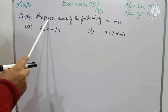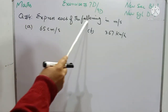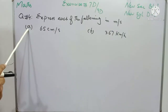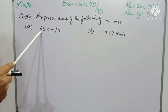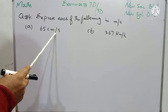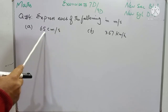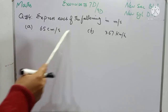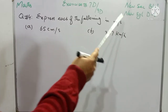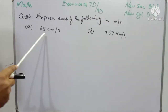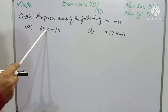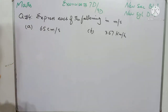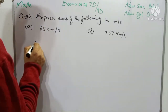Question number 4 is: express each of the following in meter per second. In part A, we have 65 centimeter per second, and we have to convert 65 centimeter per second into meter per second. In this question, we have to convert centimeter into meter, so we will write it in this way.